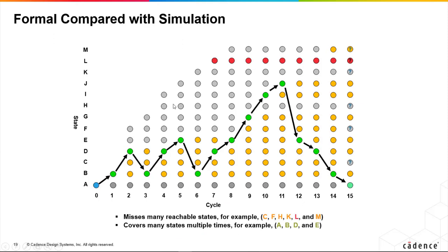So another way of viewing that same information is like this. We start from the initial state here, the blue dot, and on the next clock we see how many new states can we reach.